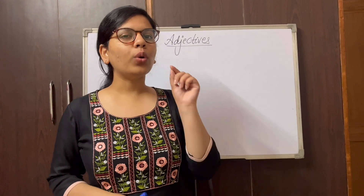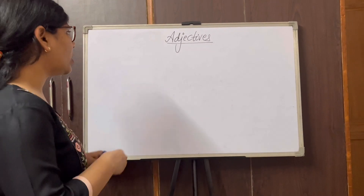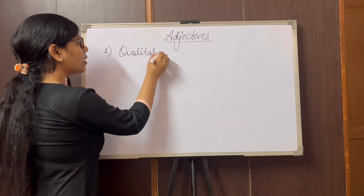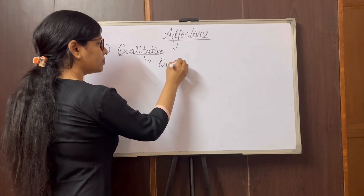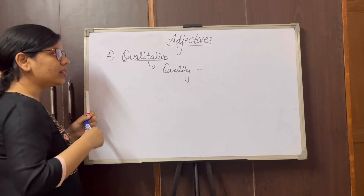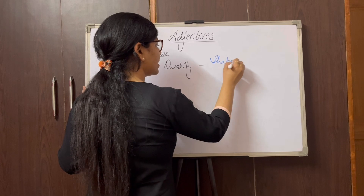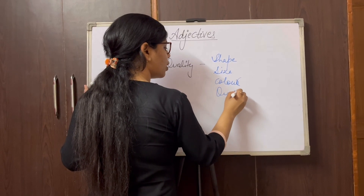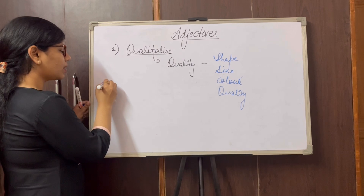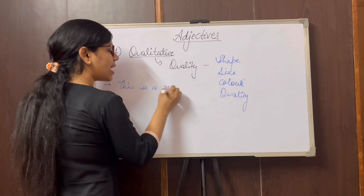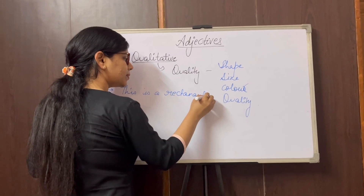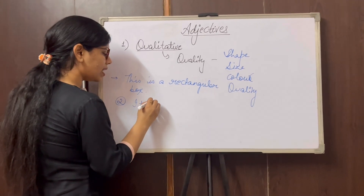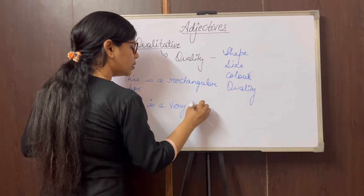Now we have several types of adjectives, so let's start with the most important one: qualitative adjective. From the word itself you can figure out that the word 'quality' is hidden, and by quality we mean its shape, size, color, or any quality. For example: this is a rectangular box, and it is a very small book.